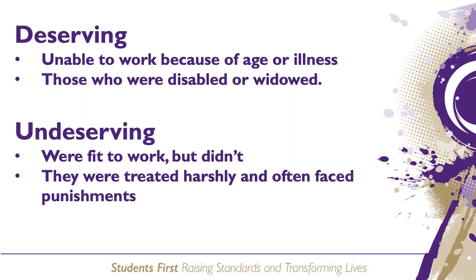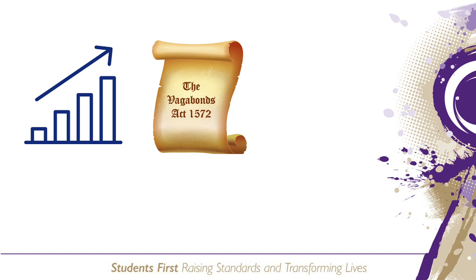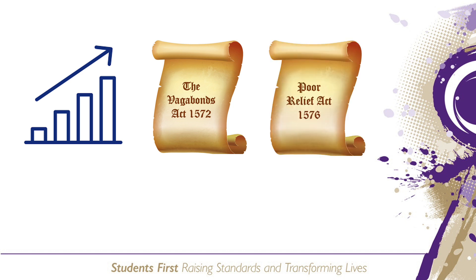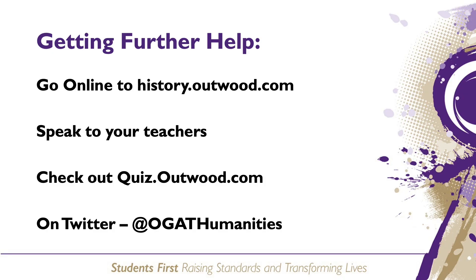In summary, the poor in Elizabethan England were classified in two different ways: the deserving poor, who were unable to work for a legitimate reason, and the undeserving or idle poor, who were fit to work but chose not to. Poverty was a growing problem which the government recognised and tried to tackle through a series of poor laws. The 1572 Vagabonds Act aimed to deter vagrancy through harsh punishment, and the 1576 Act for the Relief of the Poor gave the idle poor resources to produce goods to sell. Those that refused were sent to the House of Correction. Despite these laws, poverty remained a problem due to disruption to trade caused by conflict with Spain and the revolt in the Netherlands, which led to greater unemployment in England.